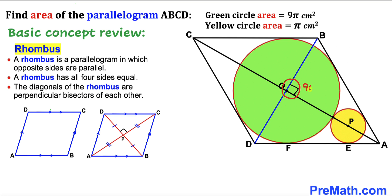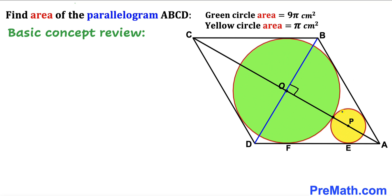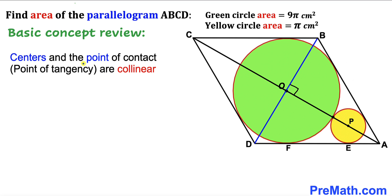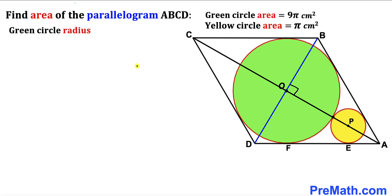Let's observe that the two circles are tangent to each other at a point. Recall this crucial fact: the centers and the point of tangency are collinear. In other words, center O, center P, and the point of contact all lie on the very same line.